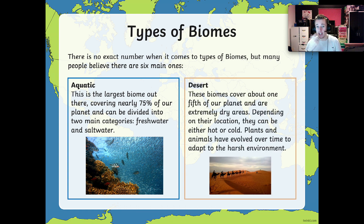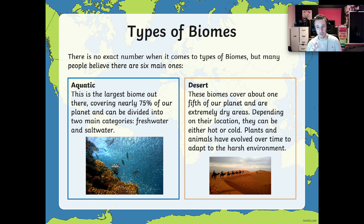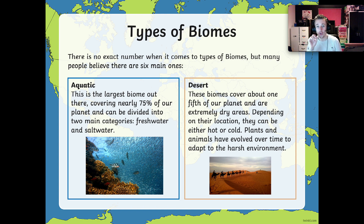The next very large one is what's called a desert biome. I'm sure you've all heard of a desert like the Sahara, for example. These biomes cover about one-fifth of our planet, which is about 20%. So 75% is aquatic and 20% is desert — we're talking about 95% taken up just by those two different biomes. These biomes are extremely dry places. Depending on their location, they can either be hot or cold — you can get a hot desert or a cold desert. For example, the North and South Pole are considered to be cold deserts. Desert just means dry, it doesn't mean hot. Plants and animals have evolved over time to adapt to this environment.